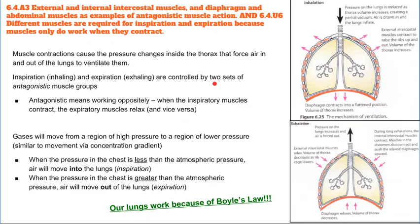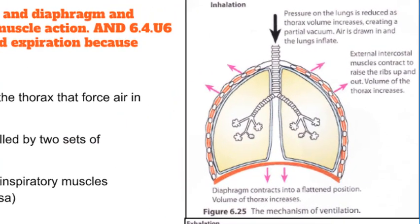Now let's look at how inhalation and exhalation work. During inhalation, first the external intercostal muscles contract, moving the ribcage up and out. At the same time, the diaphragm also contracts into a flattened position — it moves down in order to increase the volume. Follow along with the image at the top right for inhalation and the image at the bottom right for exhalation. We'll look at which muscles are contracting and how they affect the volume of the thorax.